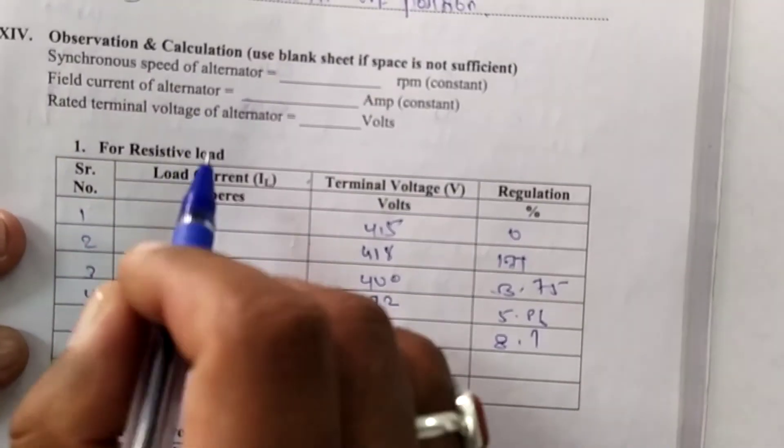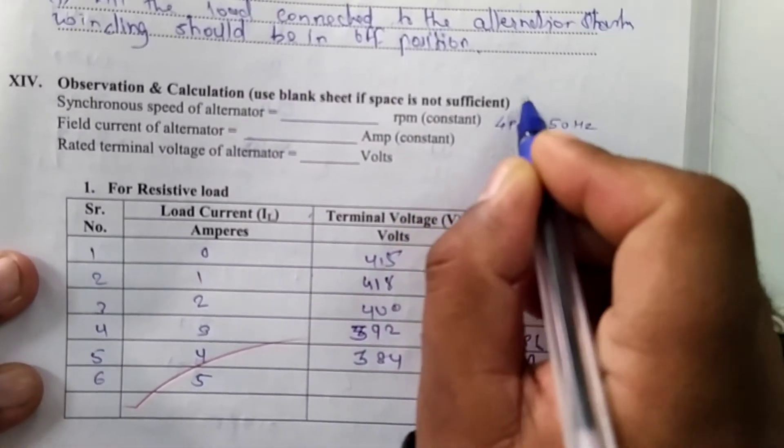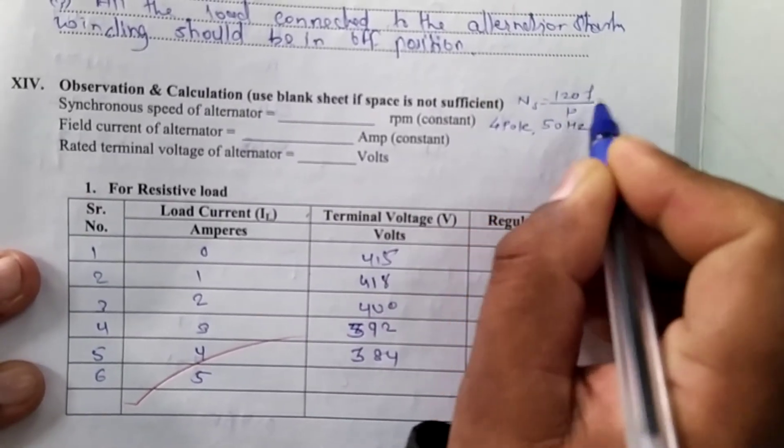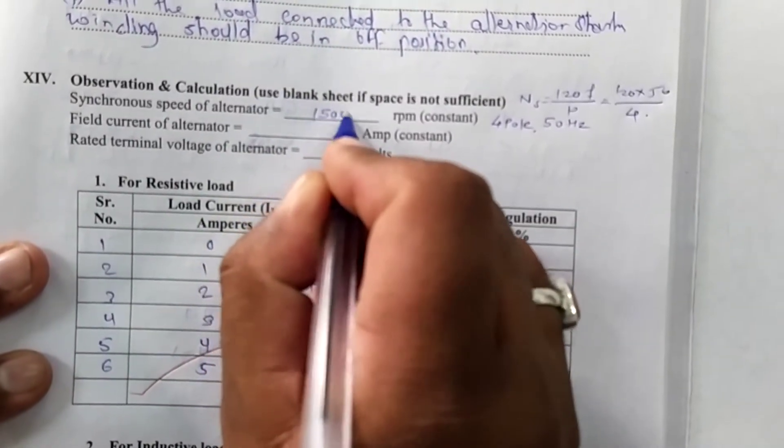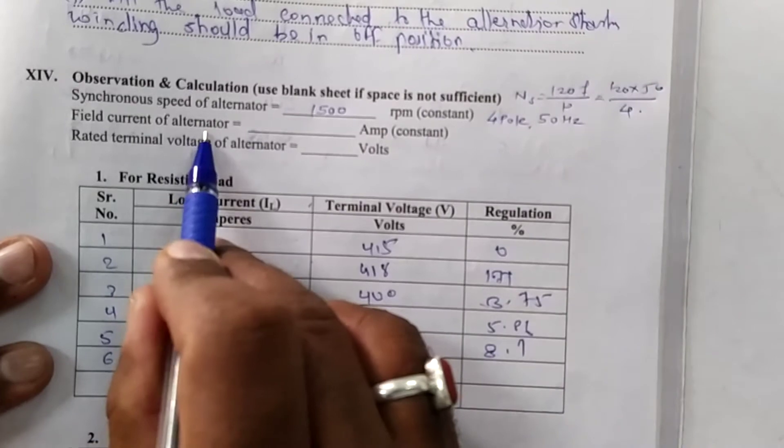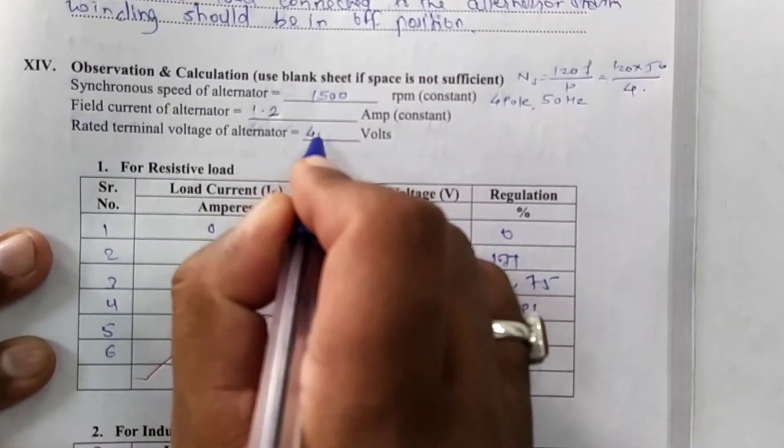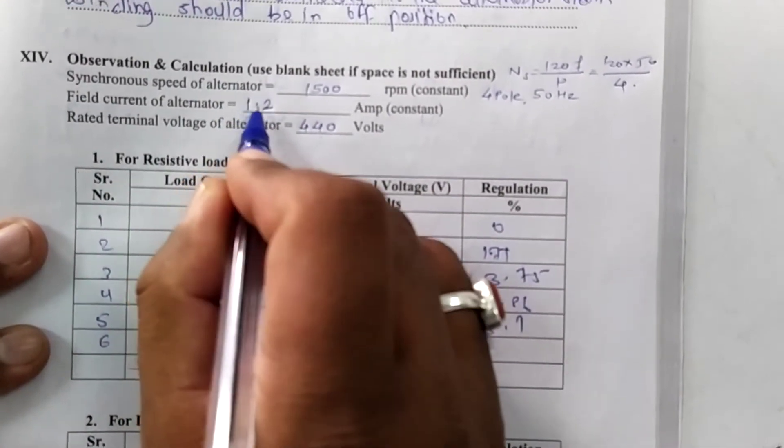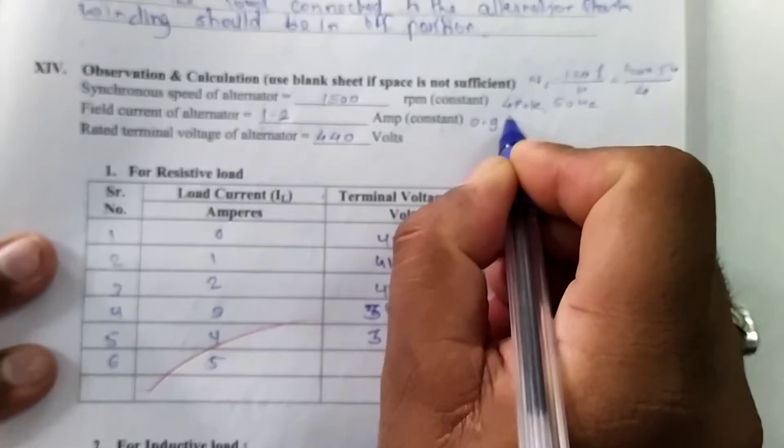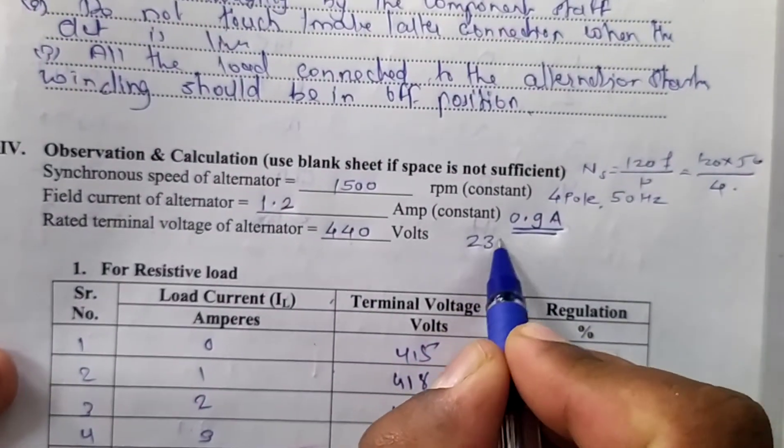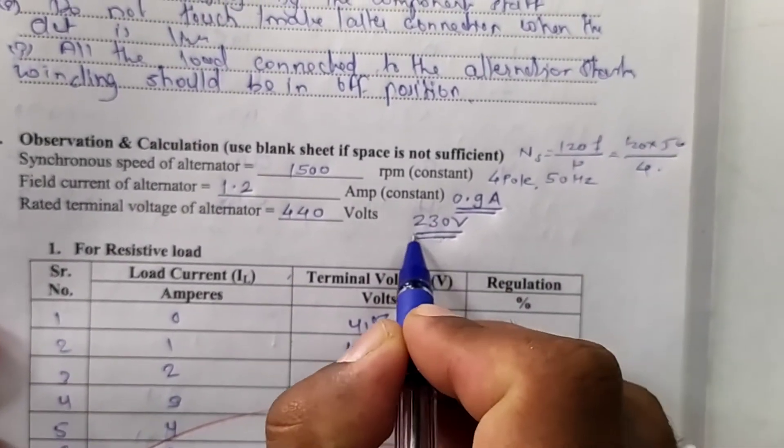Here is the observation of synchronous speed of alternator. Here 4 pole alternator is given. Frequency is 50 hertz. So synchronous speed NS is equal to 120F upon P, 120 into 50 upon 4. By simplifying this, we are getting alternator synchronous speed 1500. Field current of alternator is given on nameplate is 1.2 ampere. Rated terminal voltage is given as 440 volt. But during performing this practical, we are maintaining near about 0.9 ampere field current reading and 230 volt armature output.